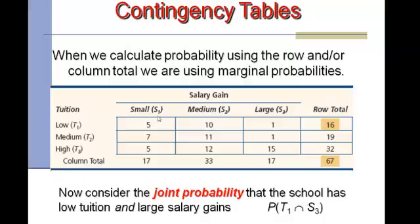We can also work out conditional probabilities from the table. Given that a graduate had a small salary gain — focusing on that column of 17 — the probability they paid low tuition is 5 out of 17, medium tuition is 7 out of 17, and high tuition is 5 out of 17.